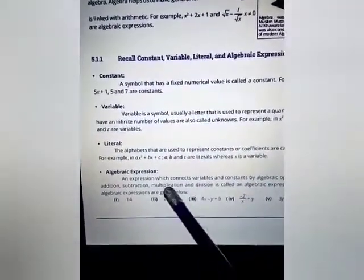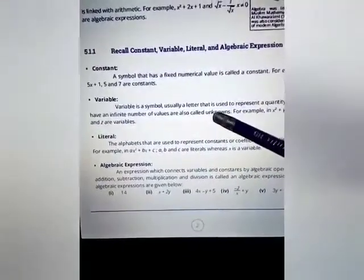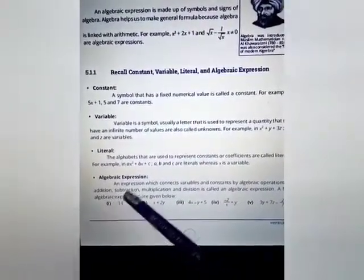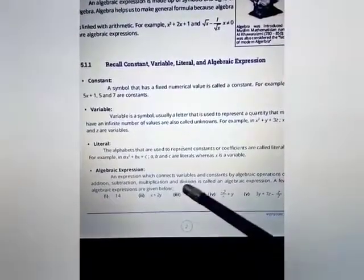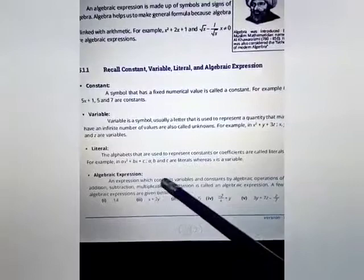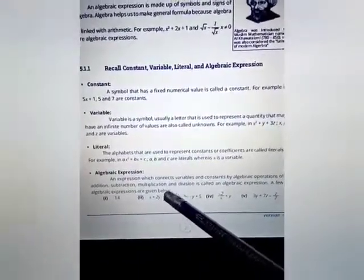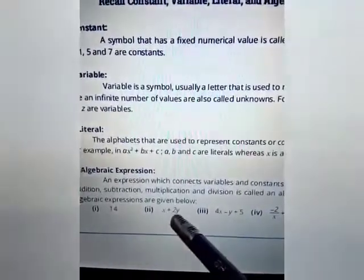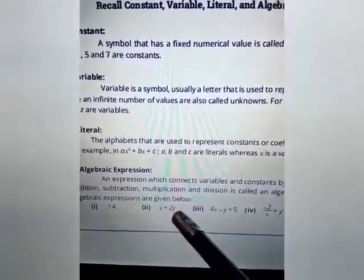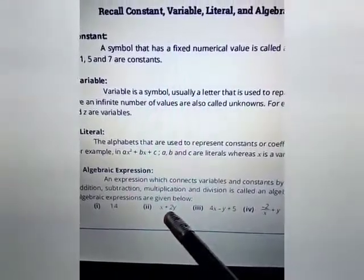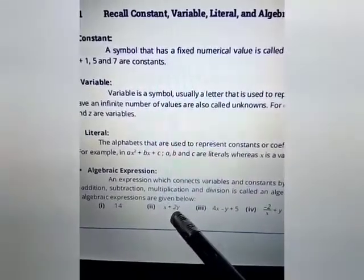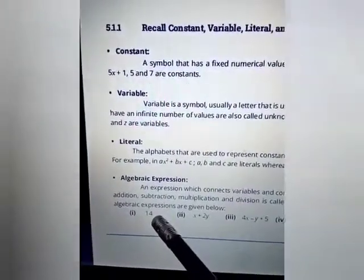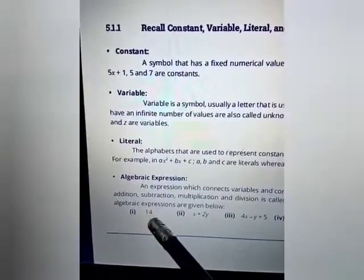Now what is an algebraic expression? An expression that connects constants, variables, and algebraic operations — where algebraic operations are addition, subtraction, multiplication, or division — is called an algebraic expression. For example, x + 2y: here x is a variable, y is a variable, plus is the algebraic operation, and 2 is a constant. This is also an algebraic expression. Even 14 alone, where variables are missing but a constant is present, is also an algebraic expression.